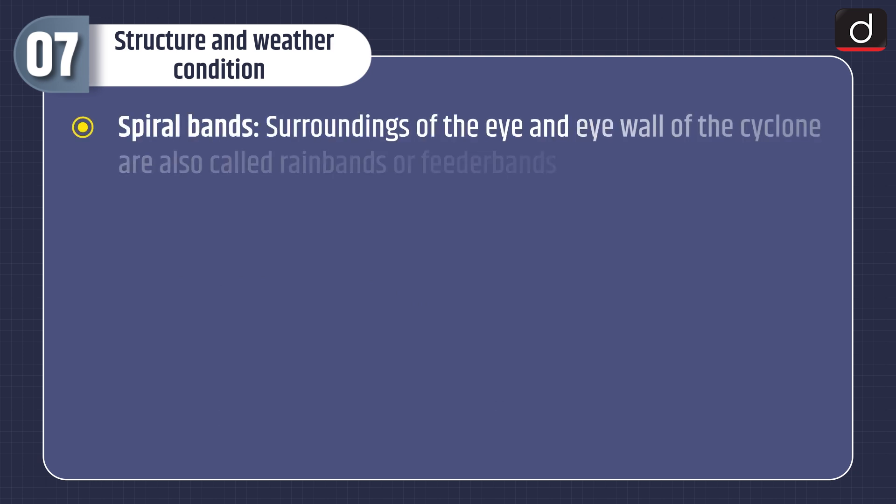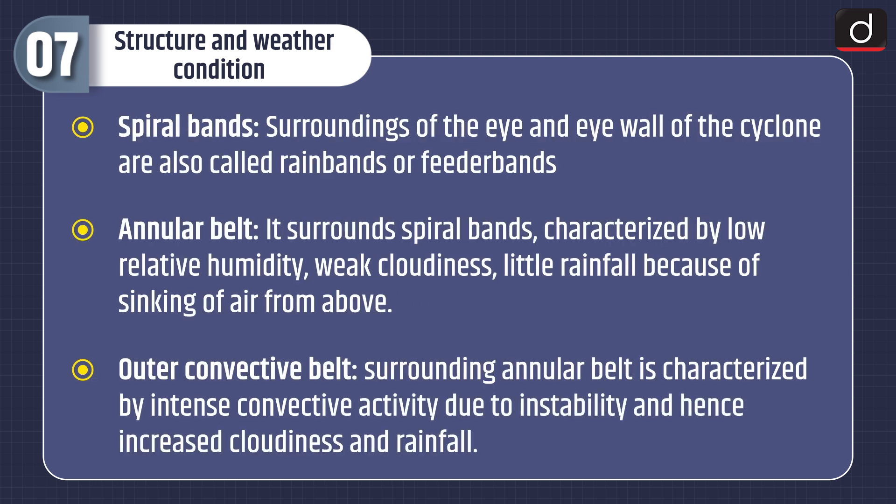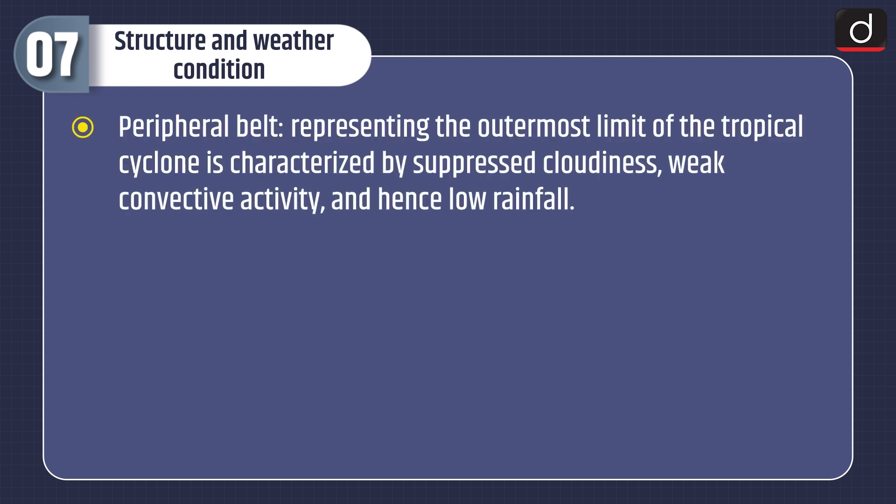Spiral bands surrounding the eye and eye wall are also called rain bands or feeder bands. The annular belt surrounds the spiral bands and is characterized by low relative humidity, weak cloudiness, and little rainfall because of sinking air from above. The outer convective belt surrounding the annular belt is characterized by intense convective activity due to instability, and hence increased cloudiness and rainfall. The peripheral belt, representing the outermost limit of the tropical cyclone, is characterized by suppressed cloudiness, weak convective activity, and hence low rainfall.